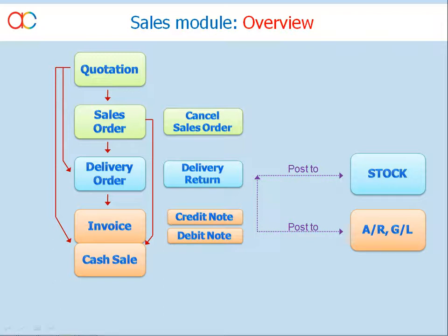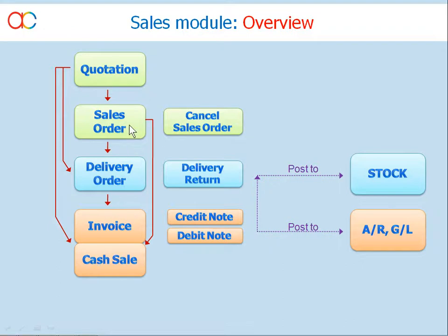The system provides several facilities to ease your transaction process. First of all, document transfer. For example, if you have created a quotation, it can be transferred to a sales order, or to a delivery order, or directly to the invoice and cash sales. Similarly, a sales order can be transferred to a delivery order, or directly to invoice and cash sales.